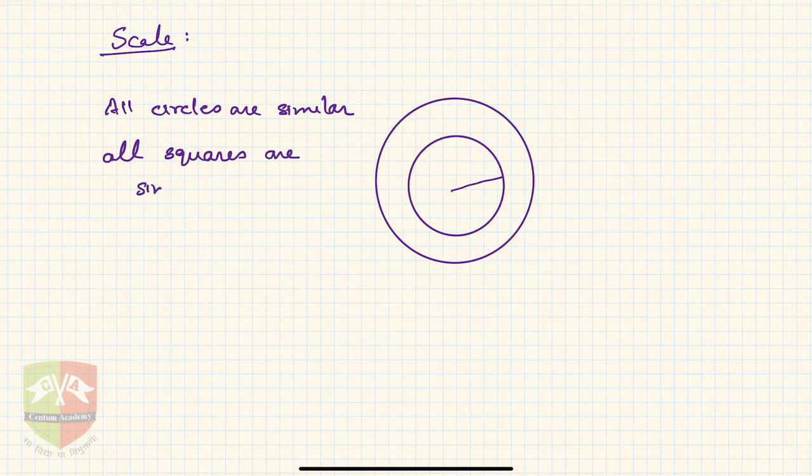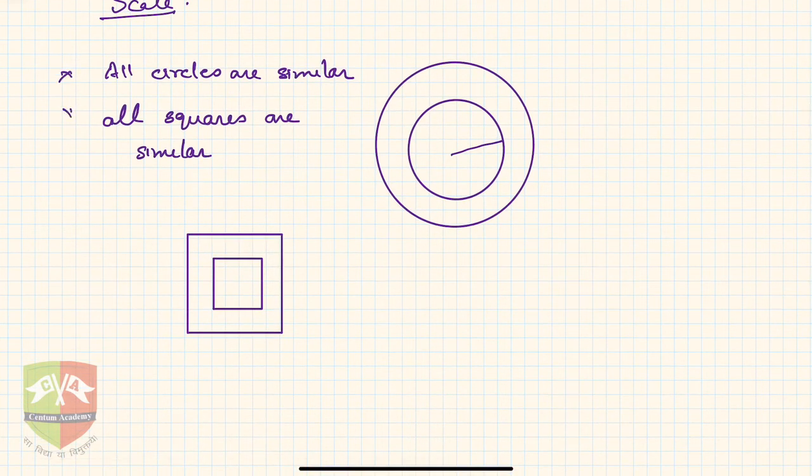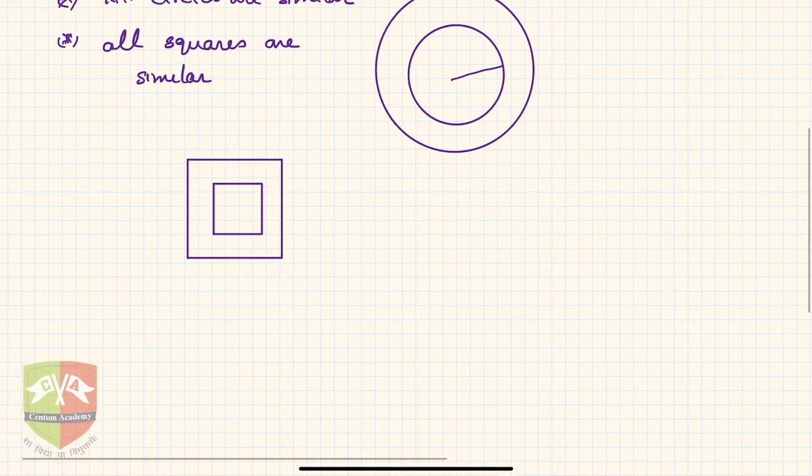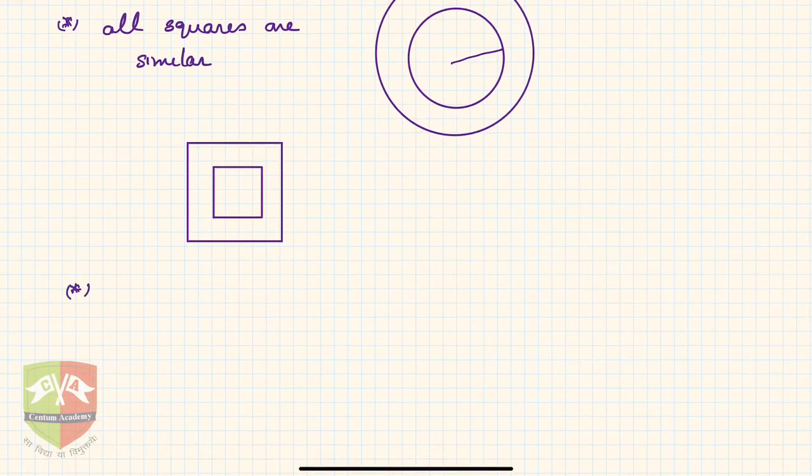Similarly, all squares are similar. Why? Because if you zoom in one of these squares, and let us say this is another square, if you zoom in the second one, after some time it will sit on the first one. All squares are similar. Similarly, all regular polygons are similar.